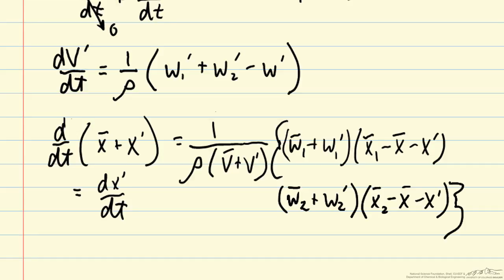This equation does not simplify in the way that the first linear equation did. We have v bar plus v prime in the denominator. Then we also have products of terms like w1 bar times x prime or w1 prime times x1 prime.